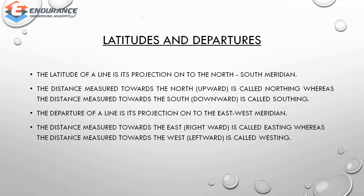Next is latitude and departure. What is latitude? The latitude of a line is its projection onto the north-south meridian — the distance measured towards the north or south. Measurements towards the north are positive and towards the south are negative. Departure is the projection onto the east-west meridian.